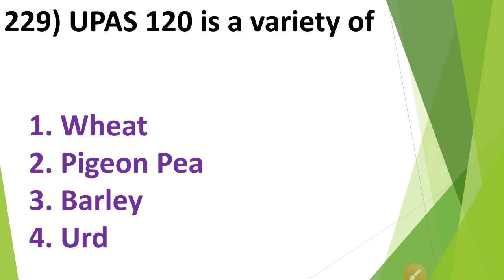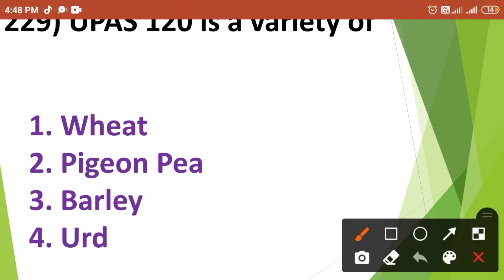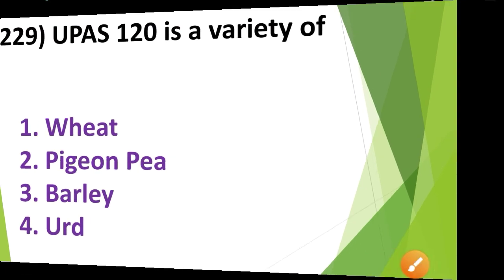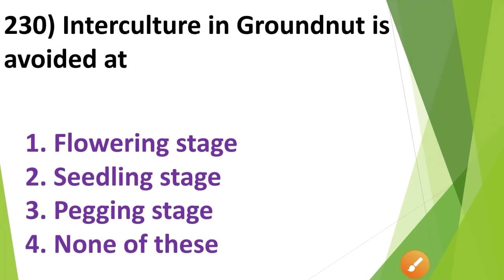UPAS120 is a variety of: 1. Wheat, 2. Pigeon pea, 3. Barley, 4. Urad. UPAS120 is a variety of Option No. 2 — pigeon pea.